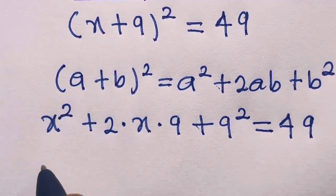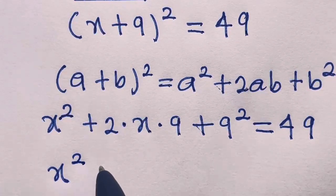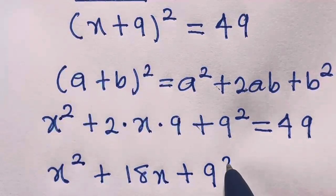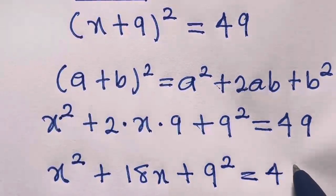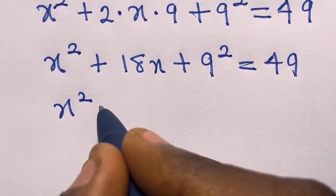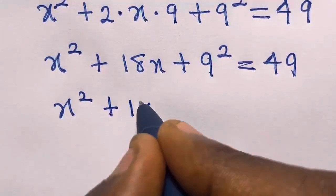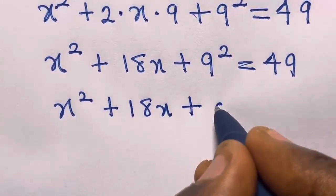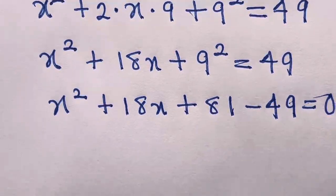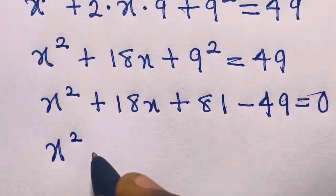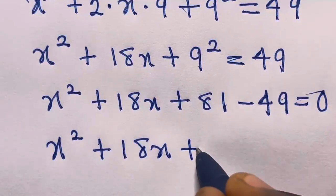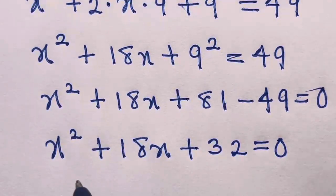Multiplying this out, we have x squared plus 18x plus 9 squared equals 49. So we can transfer this 49 to this side. 9 squared gives us 81, so we have x squared plus 18x plus 81 minus 49 equals 0, which gives us x squared plus 18x plus 32 equals 0.